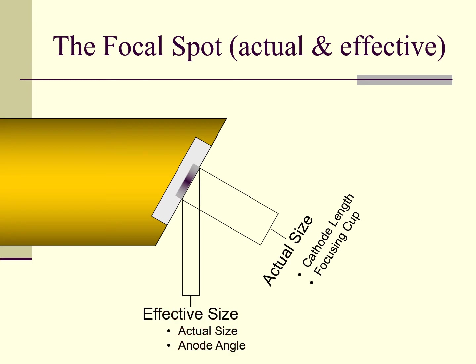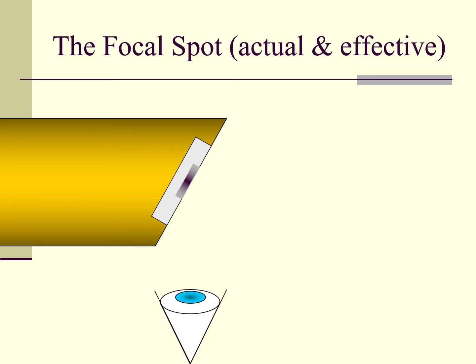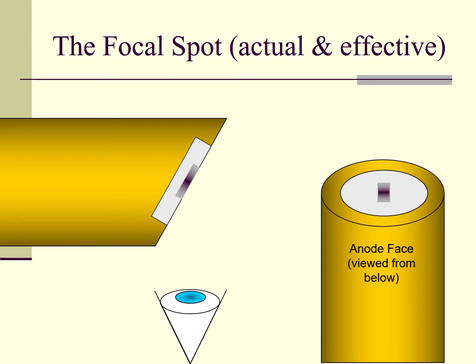The effective focal spot is measured parallel to the central ray. It is formed by a combination of the actual size and the angle of the anode or target face. Some people think the anode angle is there to direct x-rays out of the tube — this notion is wrong. X-rays cannot be directed once produced; they are either confined by the x-ray tube housing or allowed to escape via the tube port and collimator. If we were to place our eye underneath the anode, we would see a view that looks like this. Notice the effective size is much smaller than the actual size.